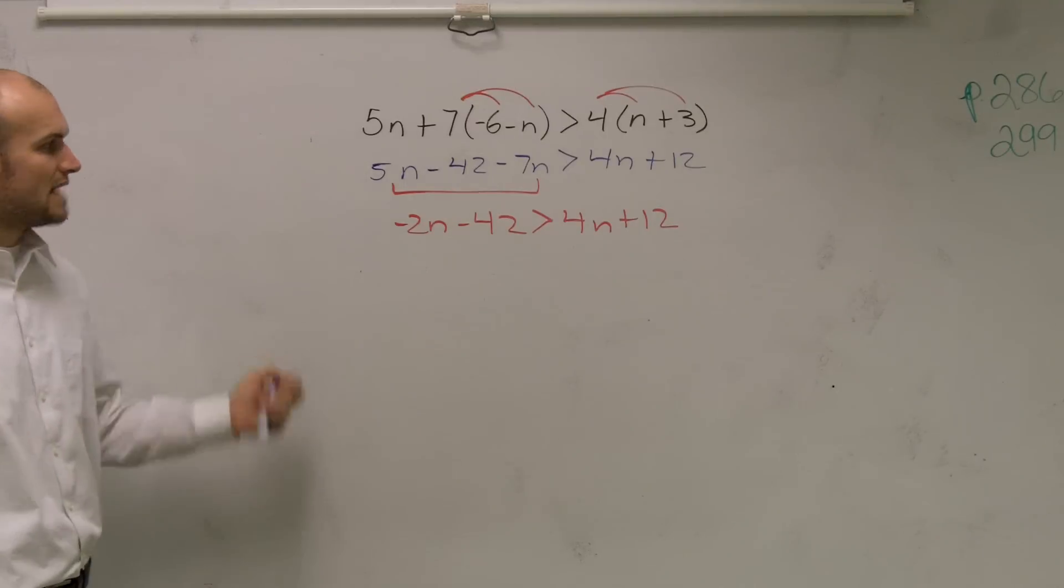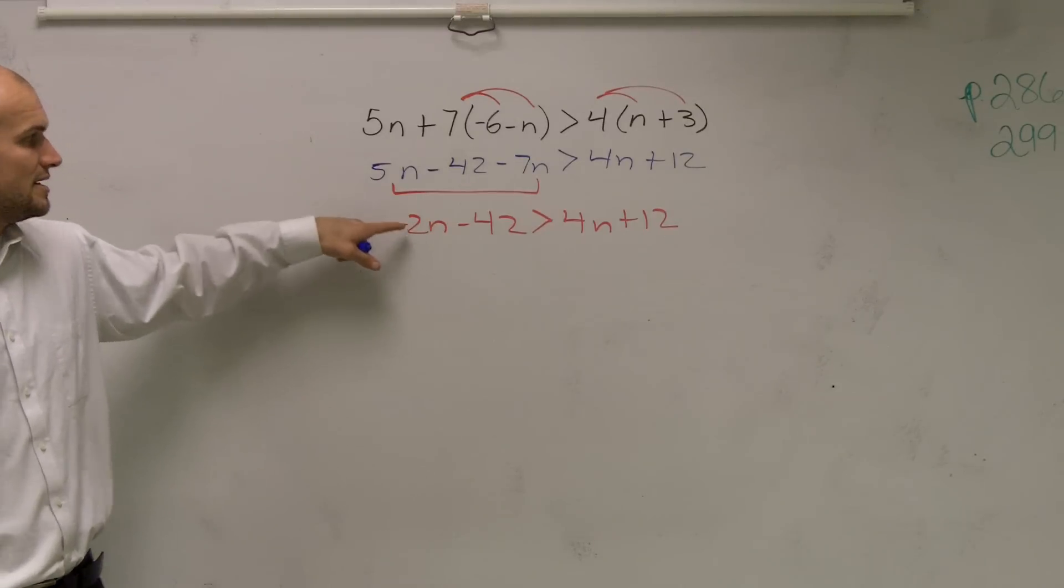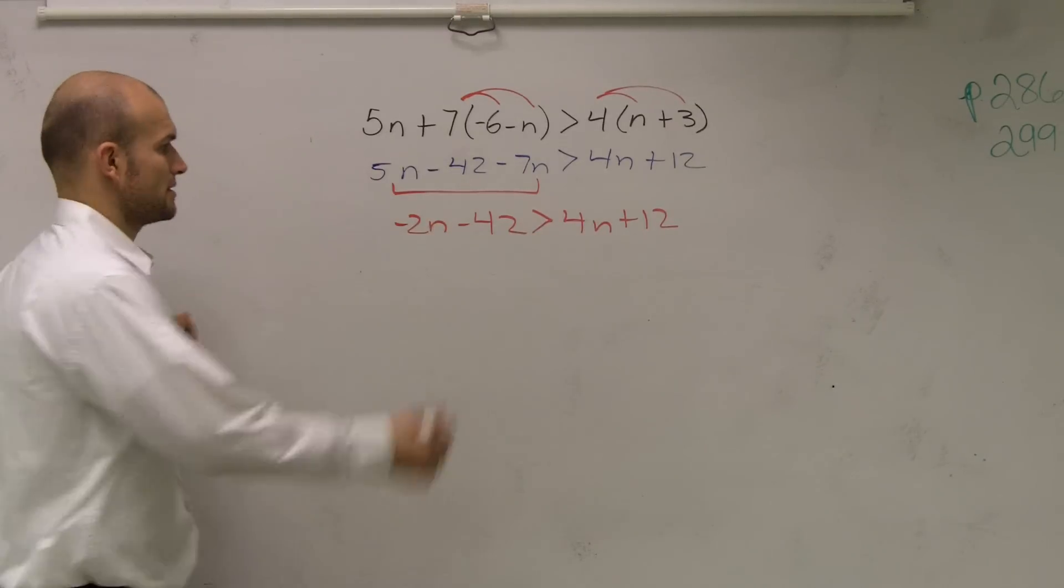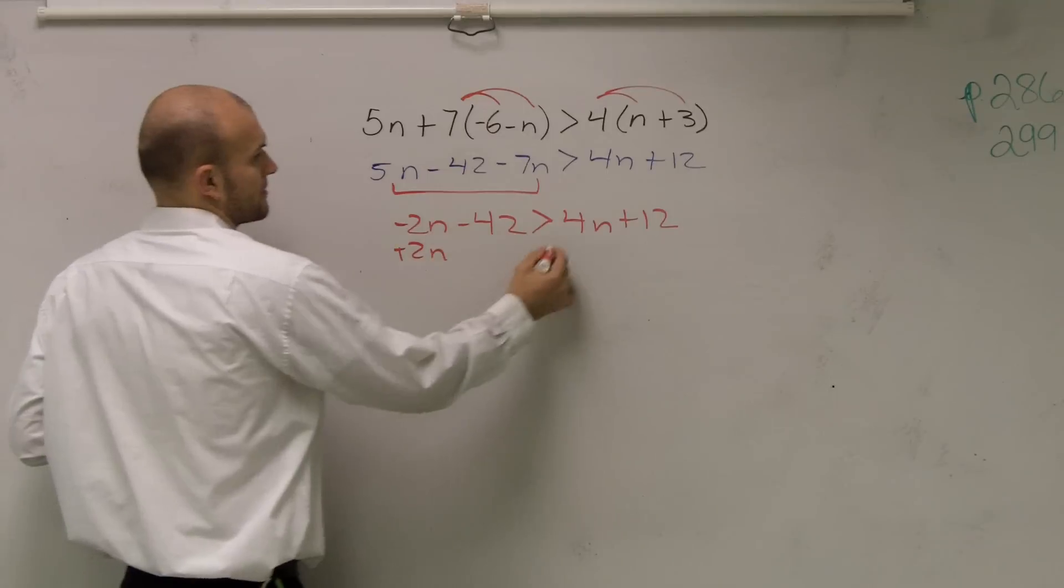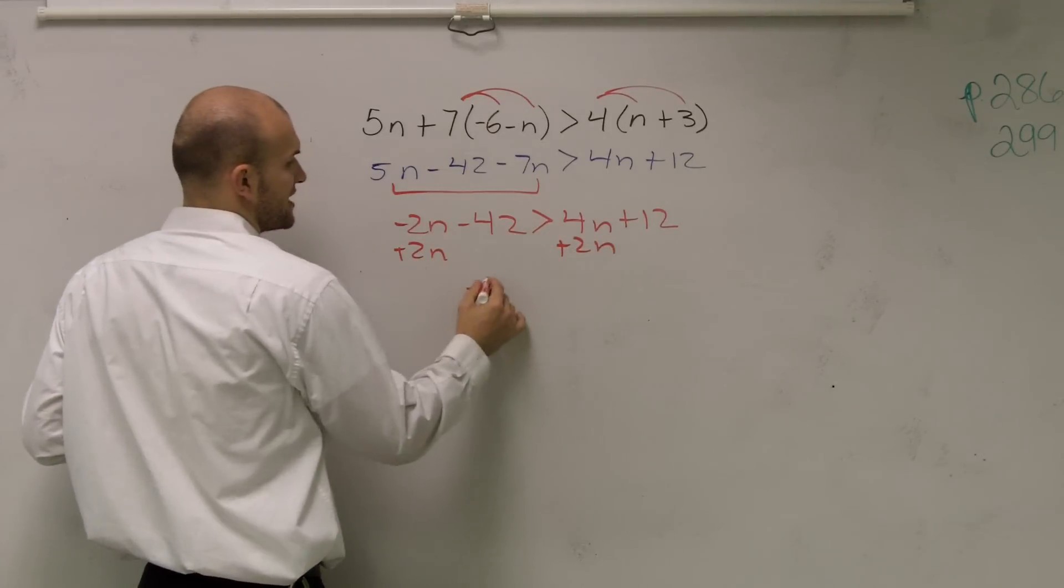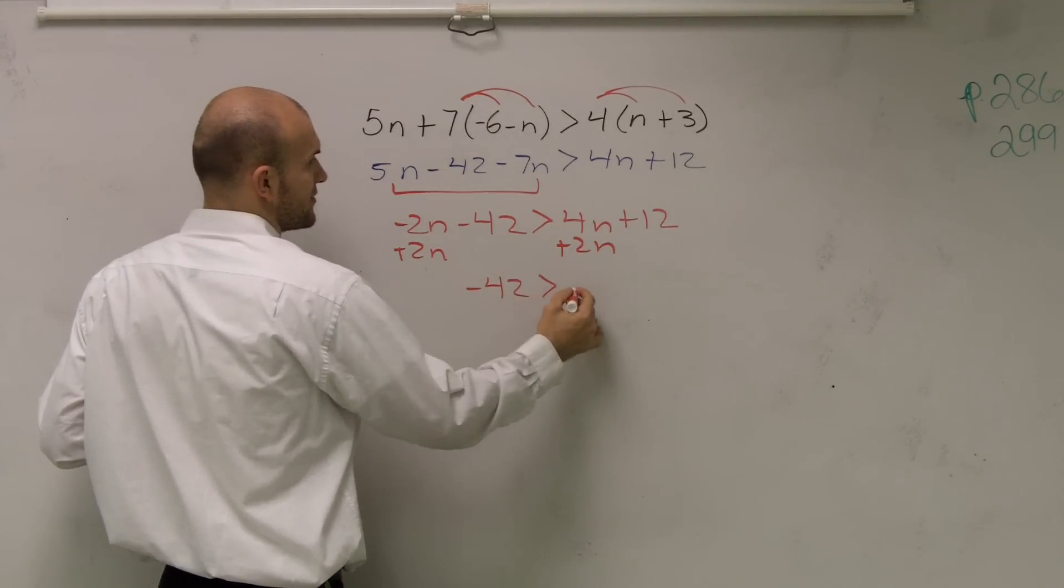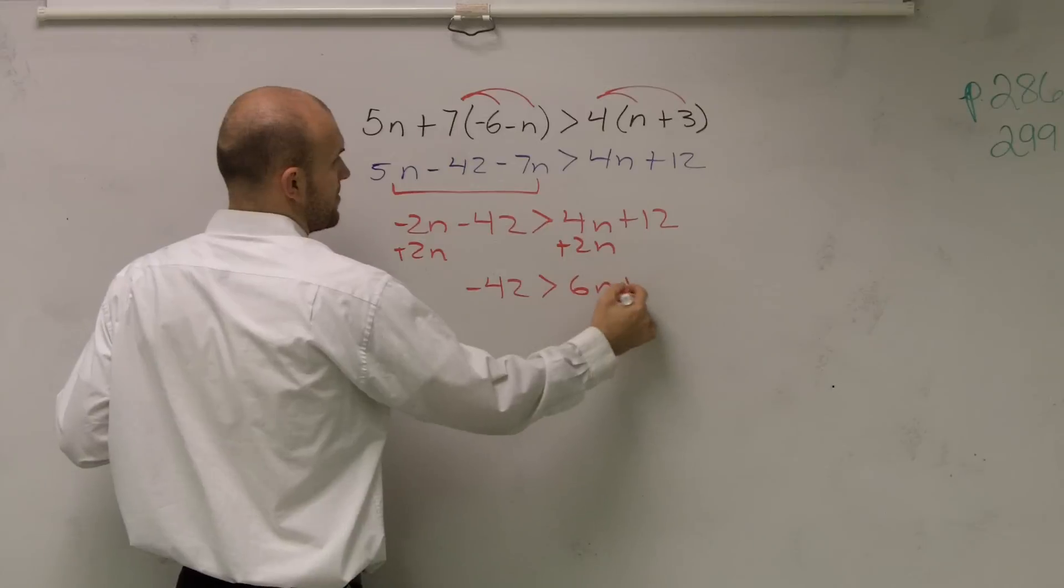Now we just need to get the variable on the same side. I like to get rid of the smaller of the two variables. Negative 2 is smaller than 4, so I'll add 2n. And I get negative 42 is greater than 6n plus 12.